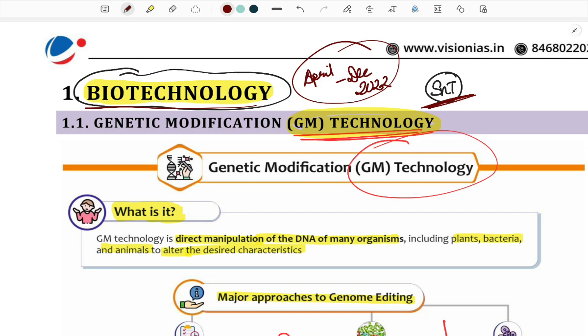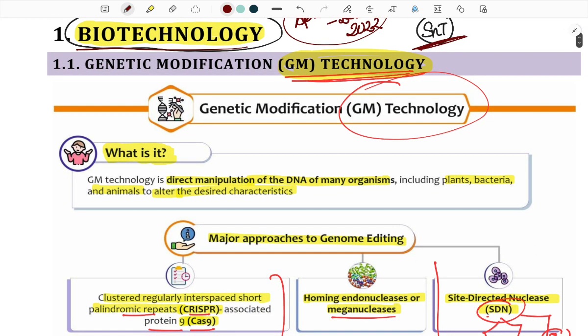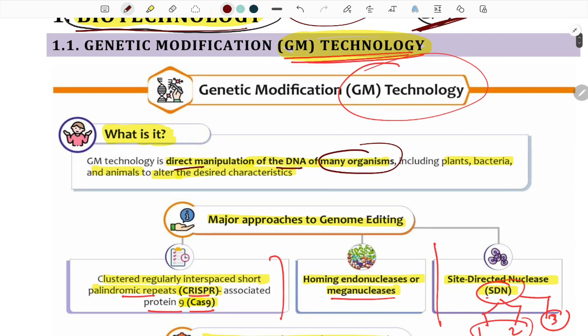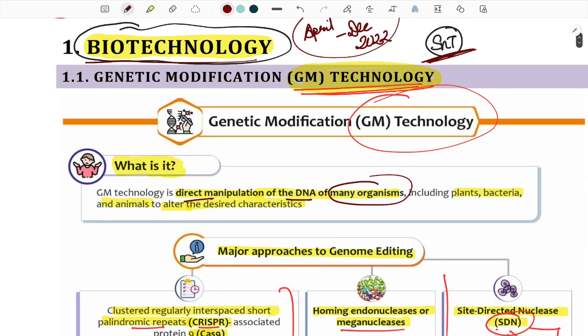Genetic modification technology involves direct DNA manipulation of an organism to achieve desired characteristics. Current organisms — including plants, bacteria, and animals — can be made pesticide tolerant, herbicide tolerant, or viral/disease tolerant through this technology.